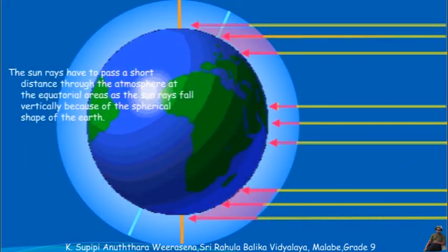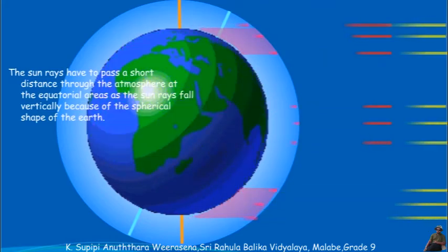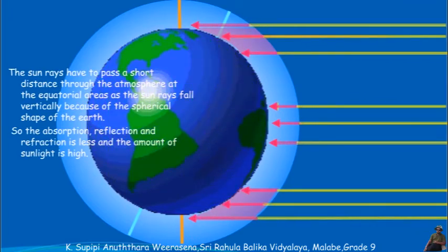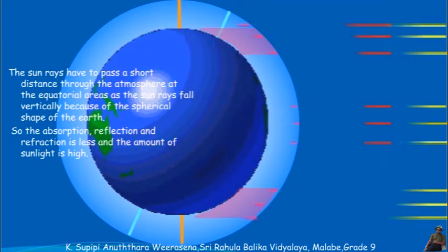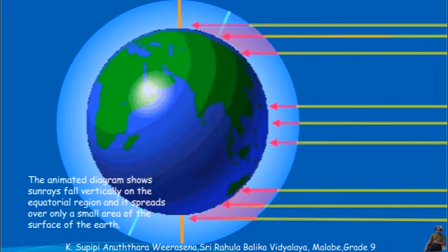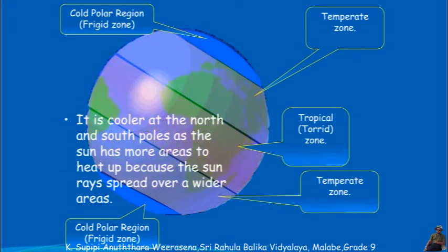The sun rays have to pass a shorter distance through the atmosphere at the equatorial area as they fall vertically due to the spherical shape of the earth. So the absorption, reflection, and refraction is less and the amount of sunlight is high. The animated diagram shows sun rays fall vertically on the equatorial region and spread over only a small area of the surface. It is cooler at the poles because the sun rays spread over a wider area.